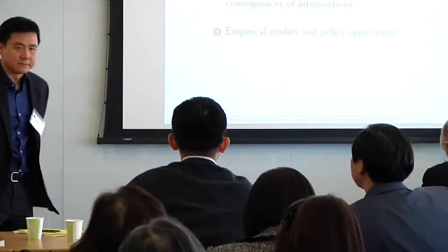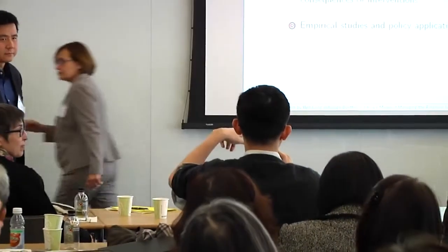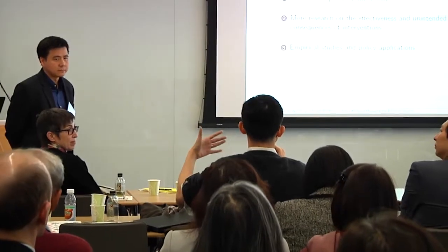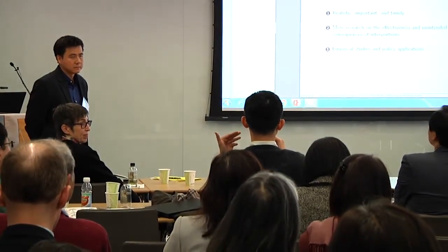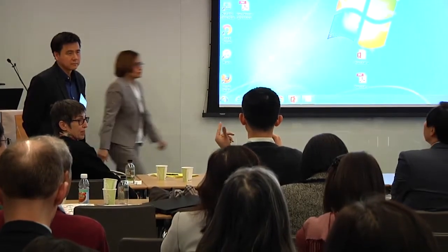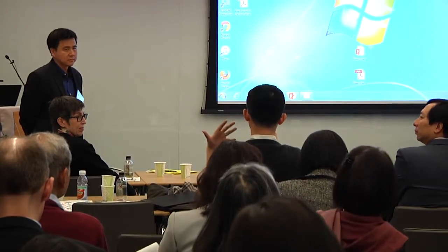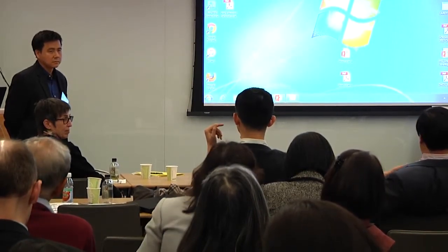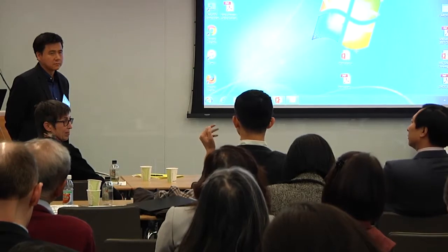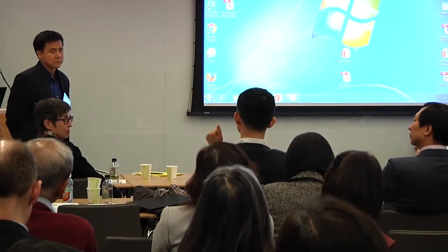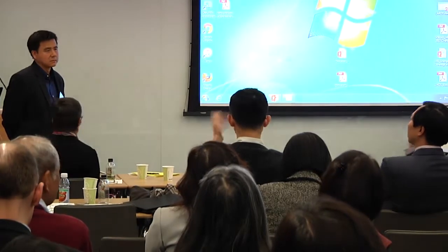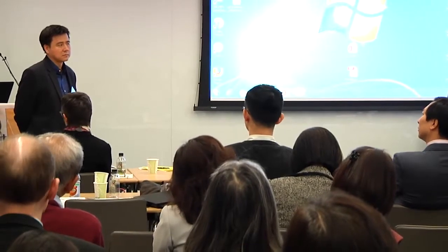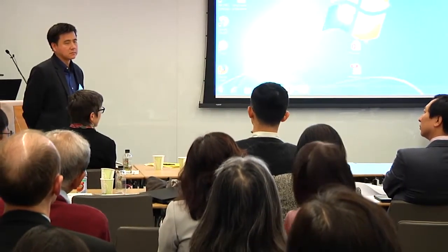Q&A begins. First question: the questioner notes that during three months of intervention, on one hand the government tried to be precise about what they were doing — because if investors don't know what you're going to do it makes things worse — but on the other hand they tried to hide exactly how they did it. The question is whether the paper can provide guidance on optimal transparency, related to the information design comment.